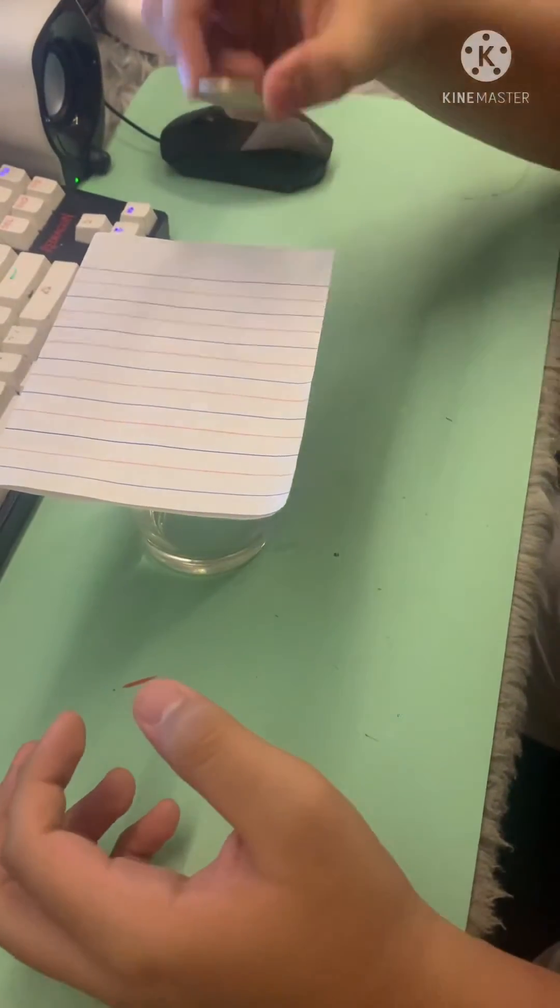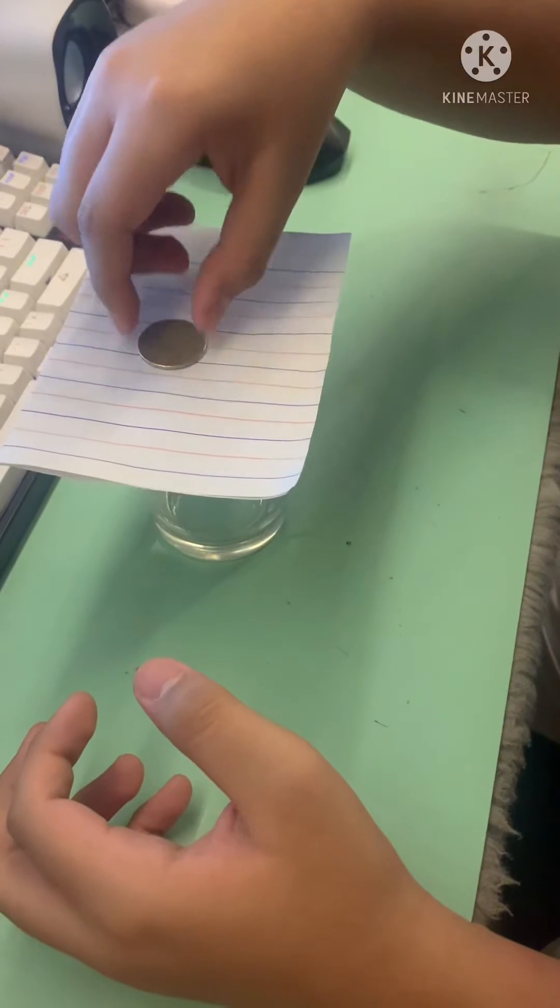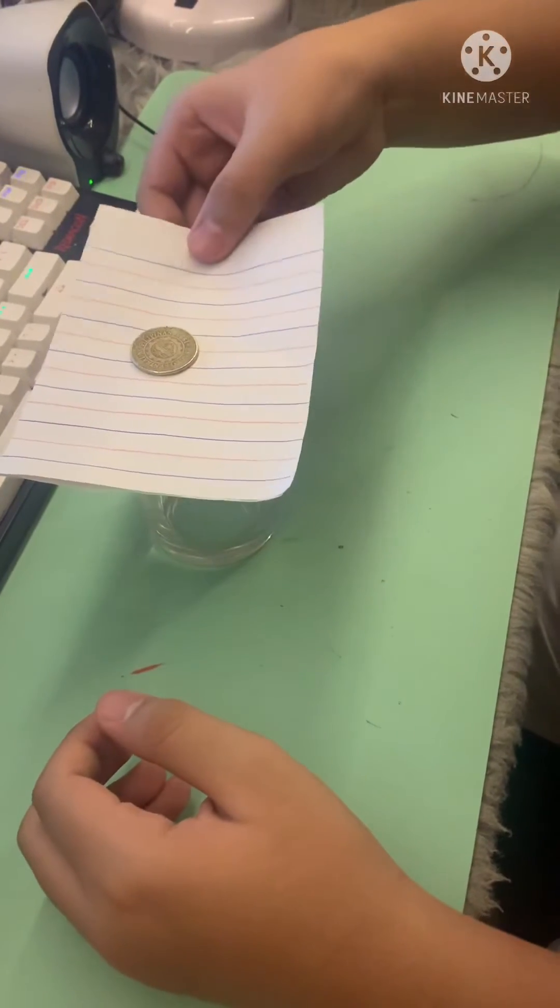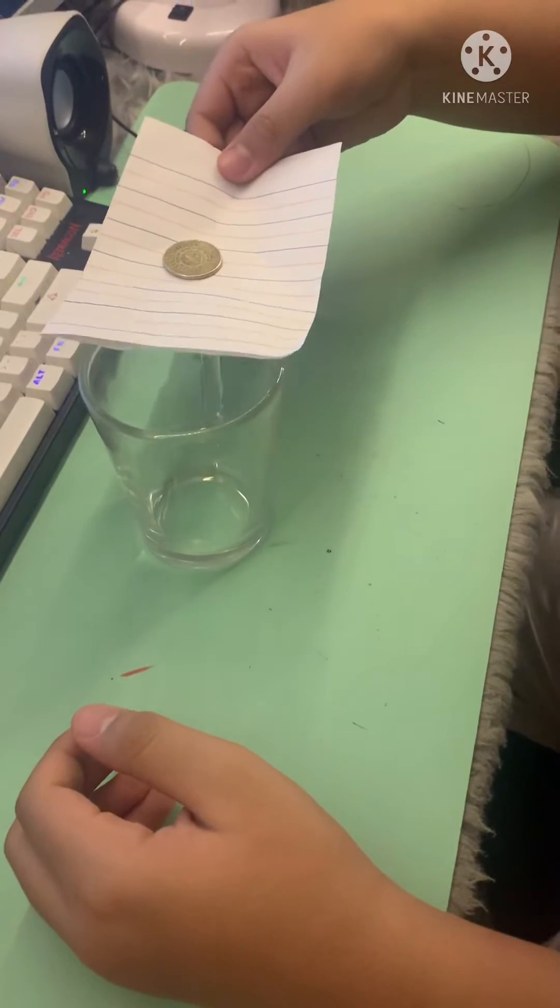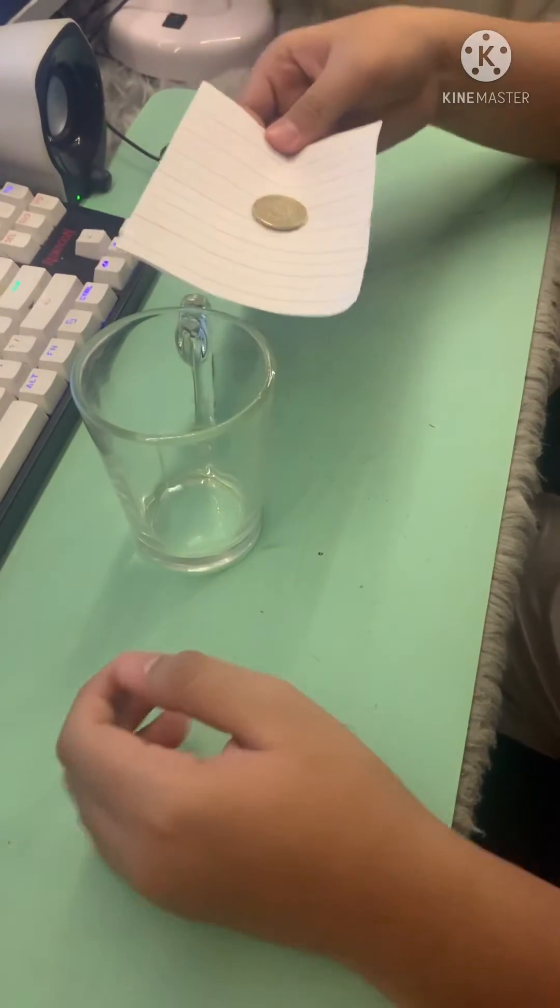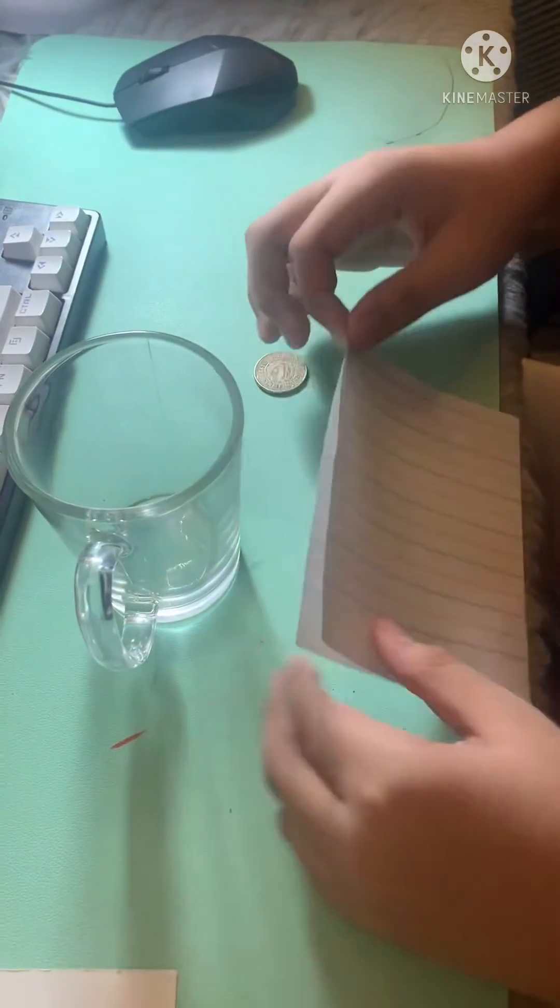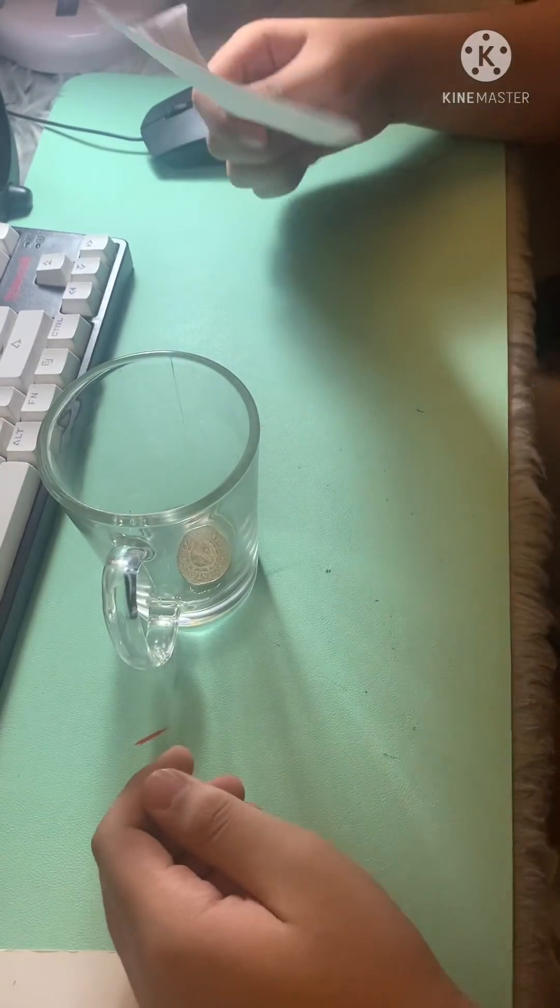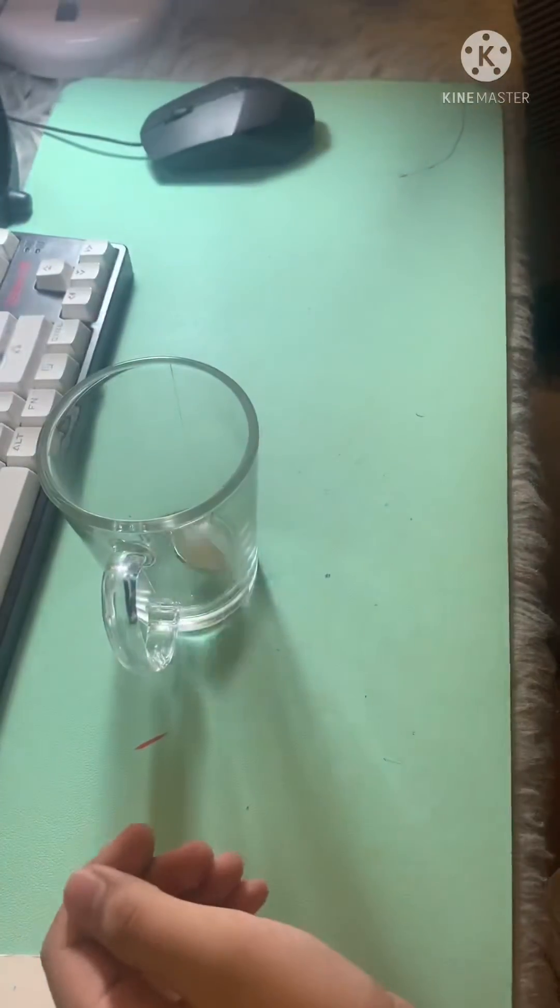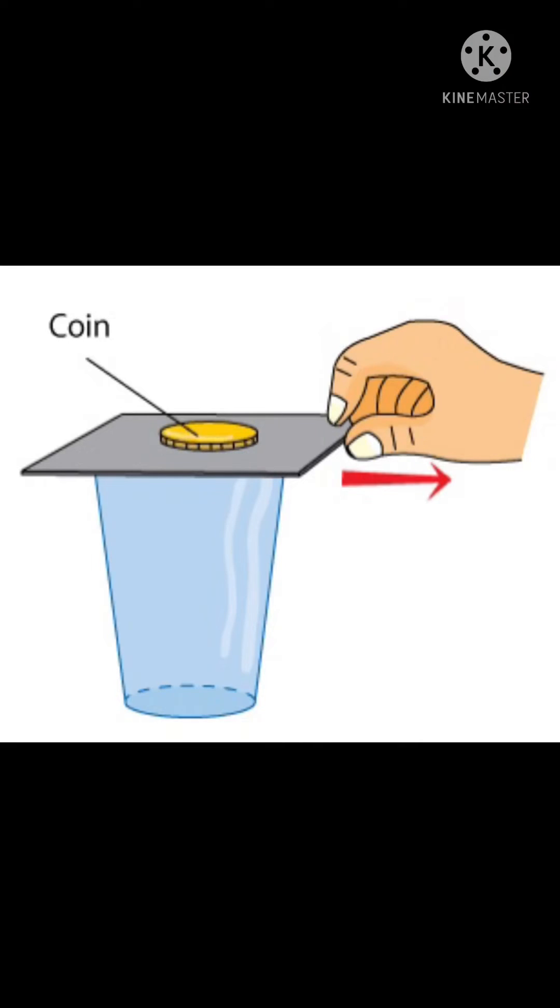If you move the paper slowly, it isn't fast enough to overcome that force. But if you flick it quickly, the coin stays in one place and then drops into the glass because the coin has inertia.